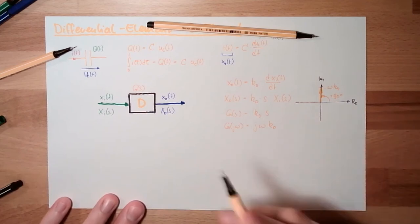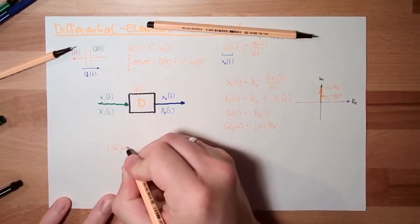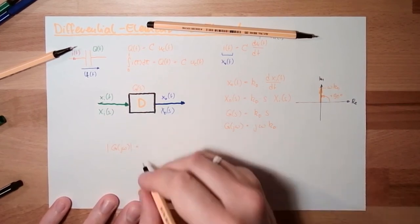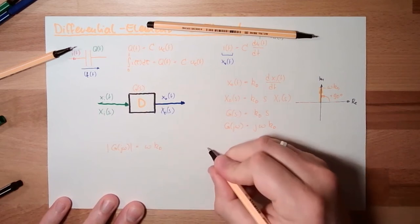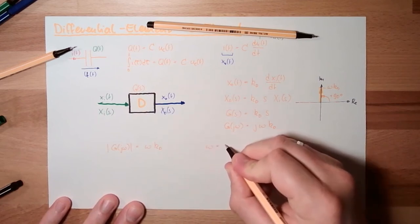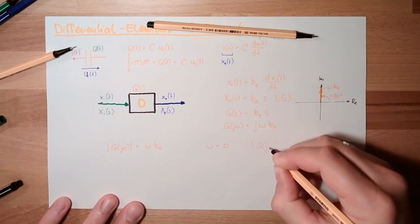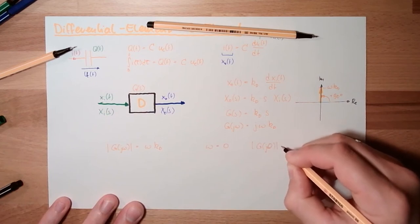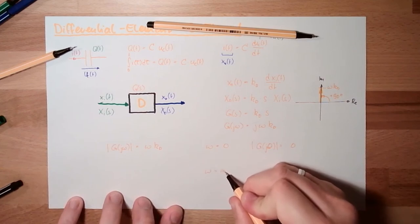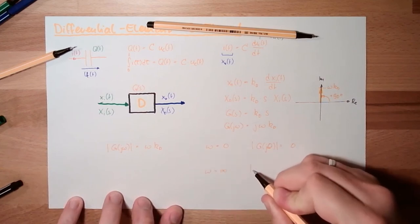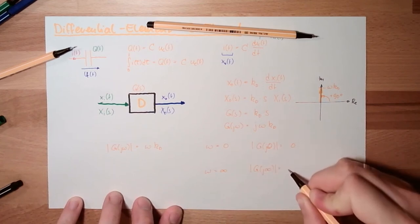What does it mean? The absolute value equals omega KD. So for omega is zero, the absolute value is also zero. And for omega is unlimited, the absolute value is also unlimited.